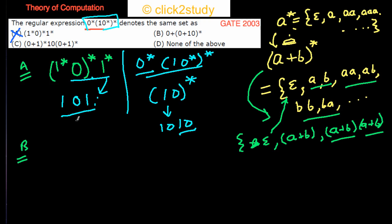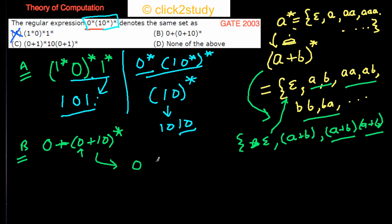Now let's look at option B: 0 plus (0+1) 0-star. The leading 0 is redundant since expanding (0+1)0-star already includes strings starting with 0. So option B simplifies to (0+1)0-star. We again look for a counter example — a string B generates that the given expression cannot.